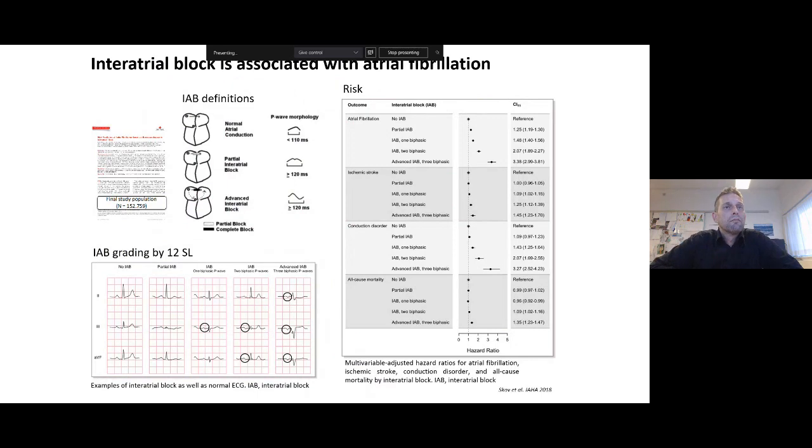So for example, in our study of interatrial block, we use the definition of block, which is a characteristic of the P wave where the duration is prolonged or the morphology is biphasic in inferior leads, leads 2, 3, or AVF. This information can then be found in the Excel files that were exported from the SQL tables. And we can then do our association analysis with different outcomes, as you can see on the right hand side.